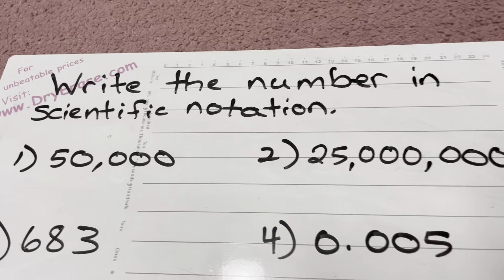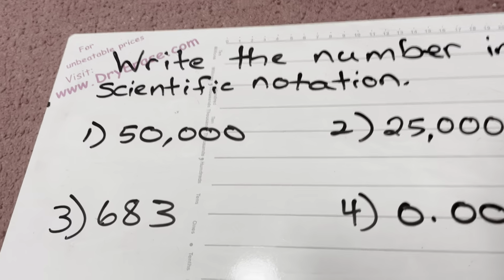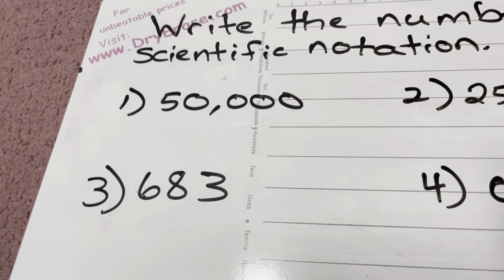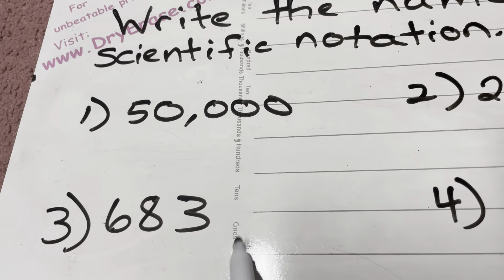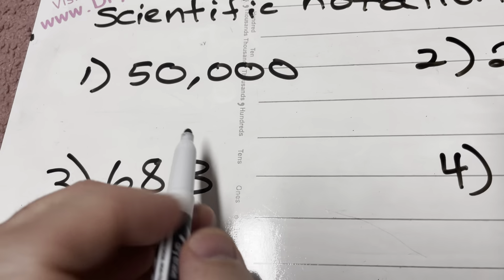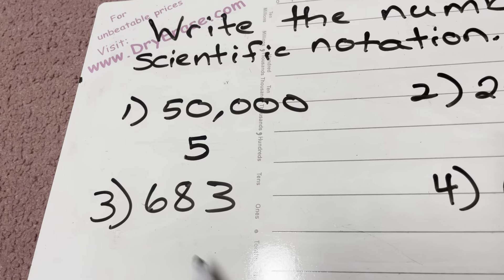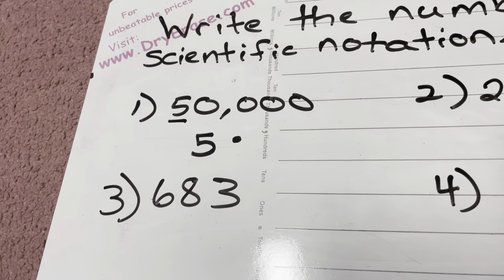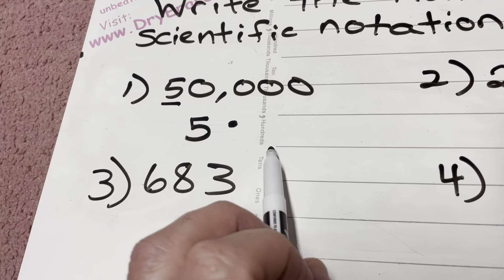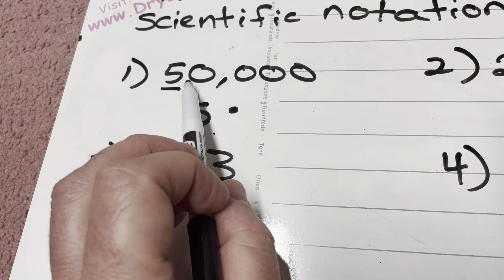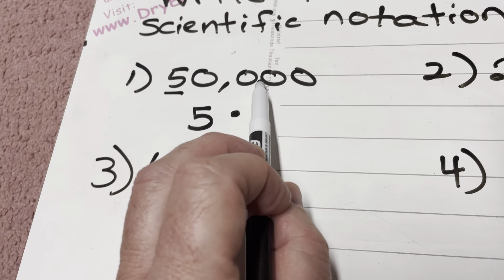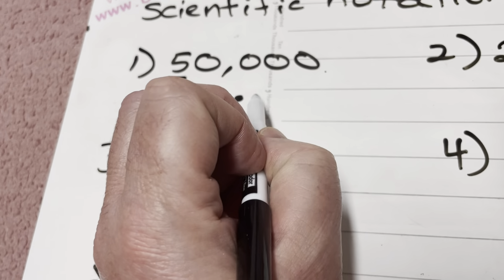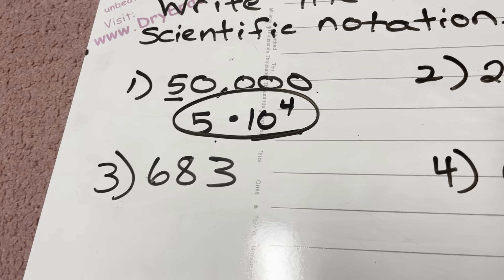Write the number in scientific notation. First, 50,000. I have to find a number that's going to work — it can be a decimal number, but it has to be at least 1 and less than 10. In this situation, that number is going to be 5. So 5 times what? How many times would I have to move the decimal to make 50,000? If I'm at 5, I'd have to move the decimal once, twice, three, four times to make 50,000. So this is going to be 10 to the power of 4. Final answer.